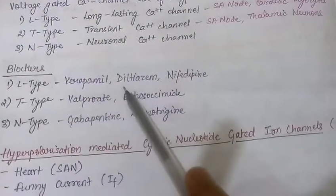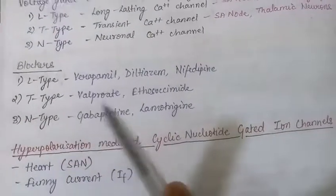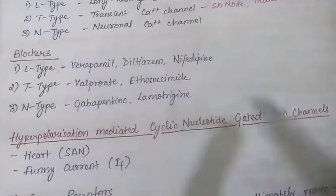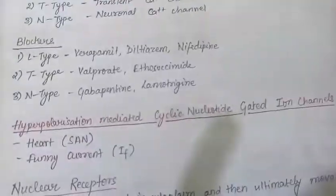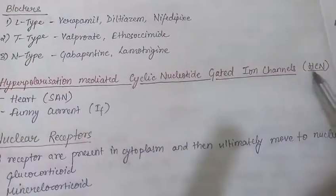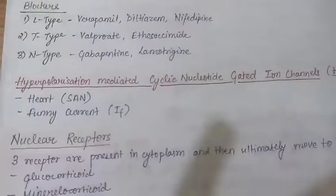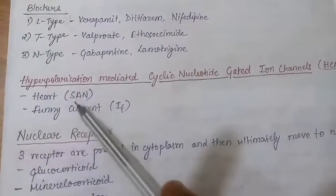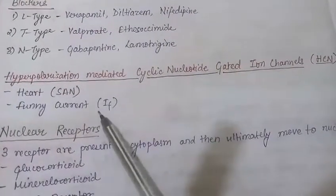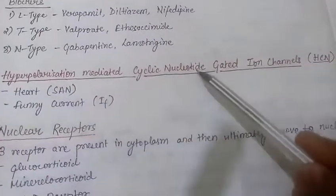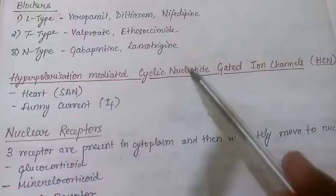Blockers for these calcium channels: for L-type, we can use verapamil, diltiazem, or nifedipine. For T-type, valproate and ethosuximide. For N-type, gabapentin and lamotrigine. There is also the hyperpolarization-activated cyclic nucleotide-gated (HCN) ion channel, present on the SA node of the heart and responsible for funny current. This channel has two stimuli: hyperpolarization and cyclic nucleotide (cAMP).